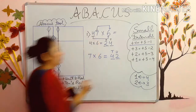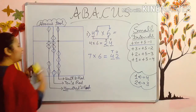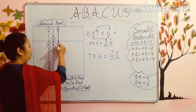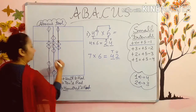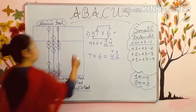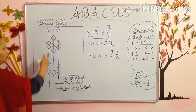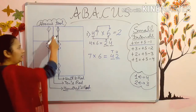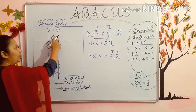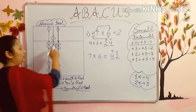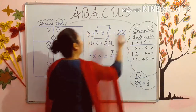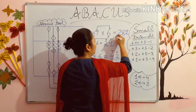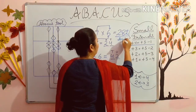Now you have to add 2 in units rod — 2 means 2 beads up. Now see what is your answer. In hundreds rod: 1, 2. In tens rod: 5, 6, 7, 8. And in units rod: 2. So your answer is 282.